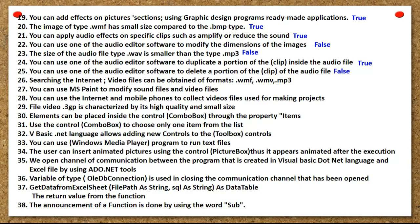When searching the internet, video files can be obtained in formats WMV and MP3. You can use MS Paint to modify sound files and video files. You can use the internet and mobile phones to collect video files used for making projects. Video file format 3GP is characterized by its high quality and small size.